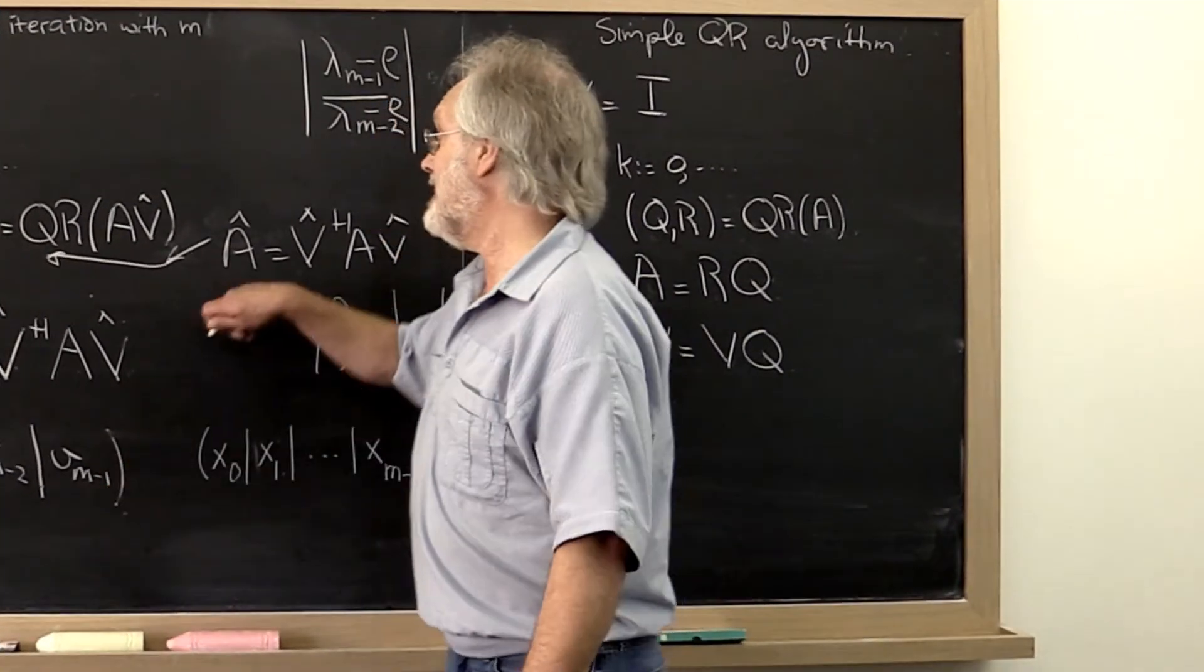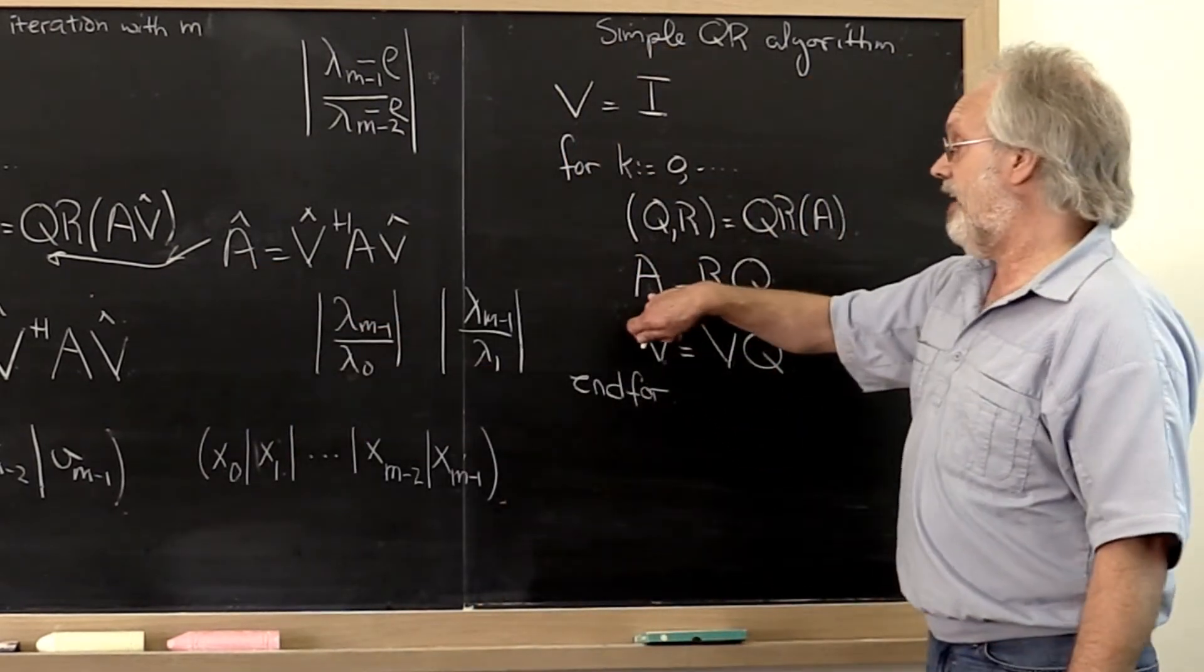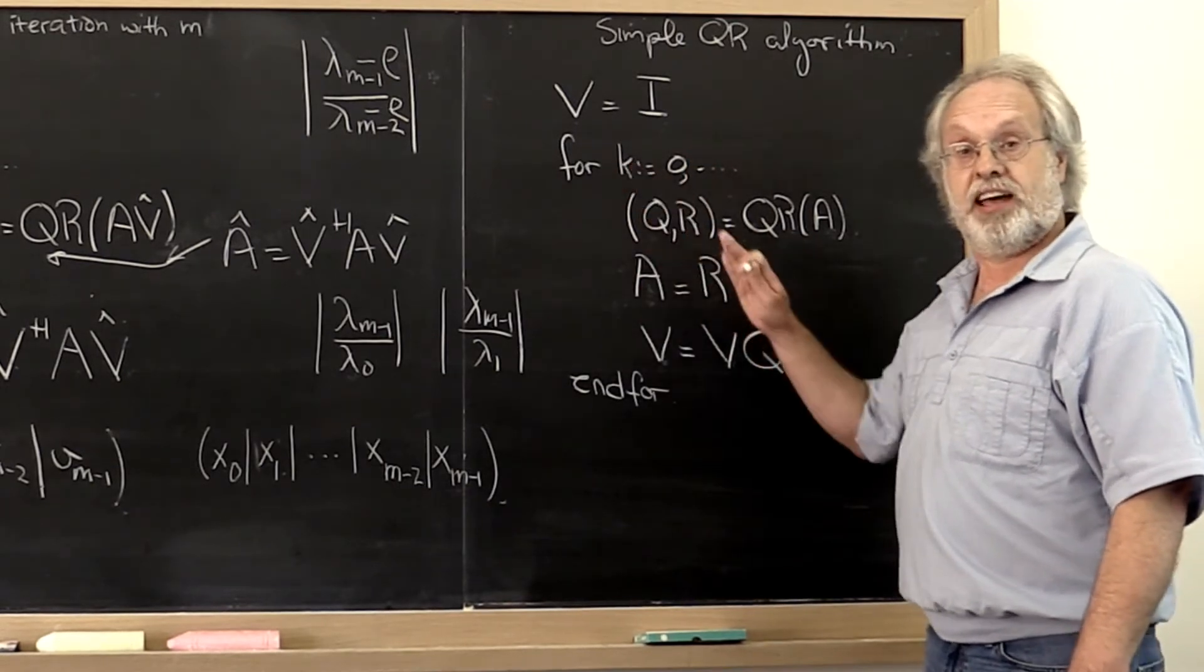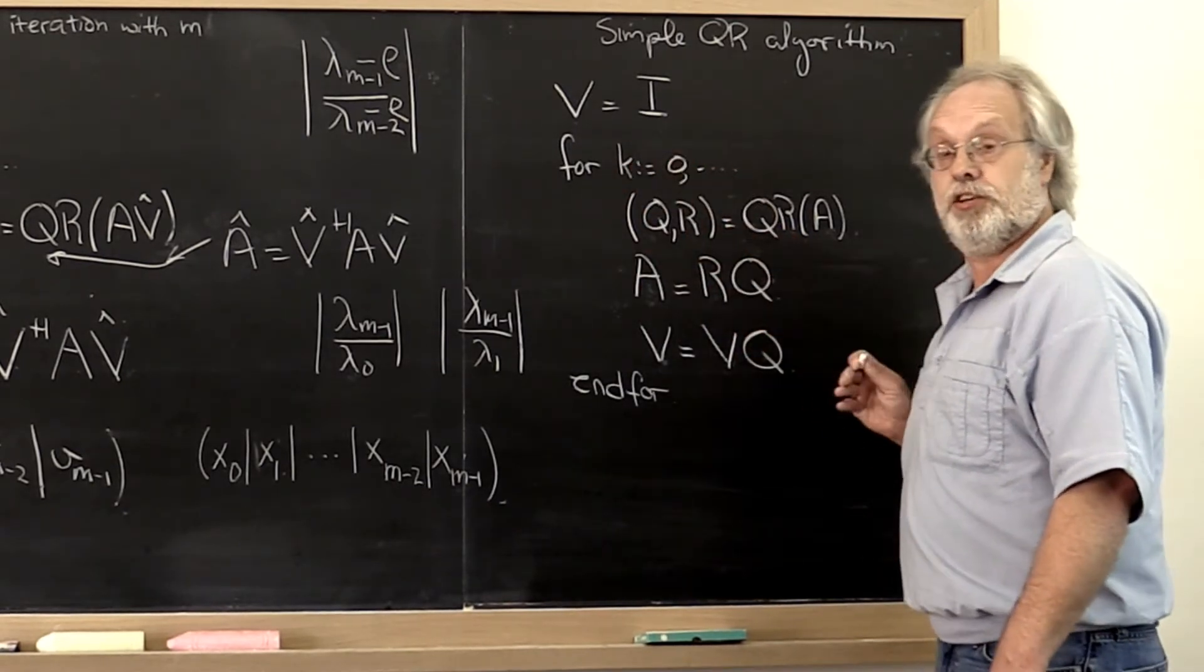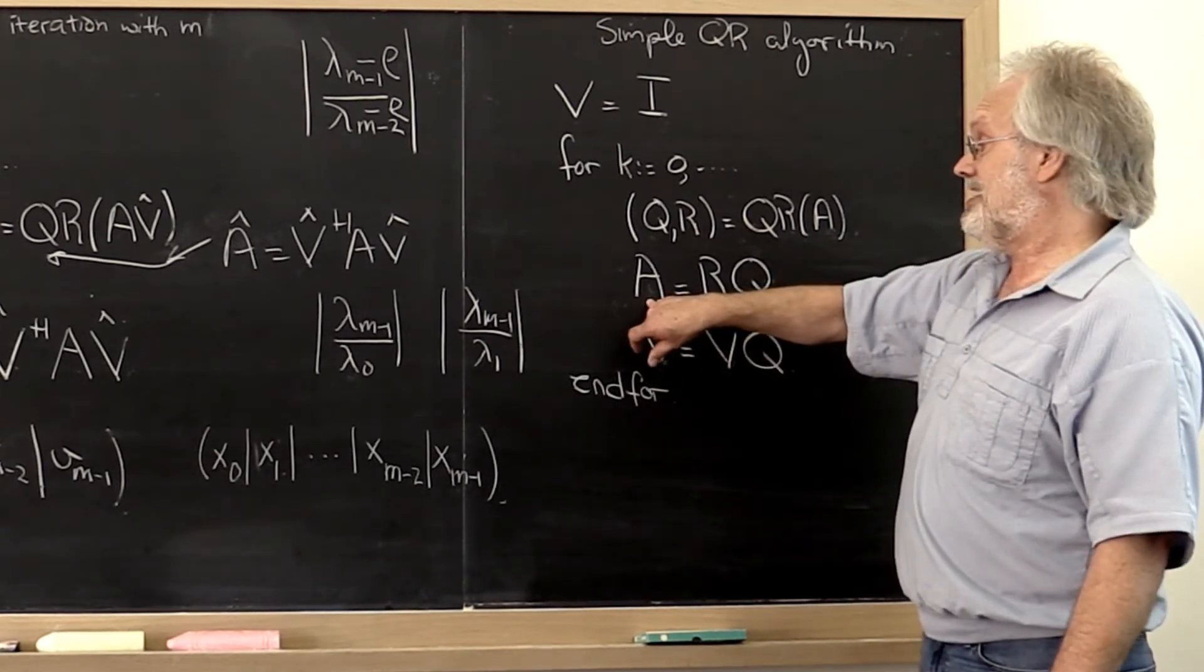And since a hat is equal to the A that is being computed here, which after all ends up converging to a diagonal matrix with all of the eigenvalues along its diagonal and the last one would be lambda m-1, what that means is that,